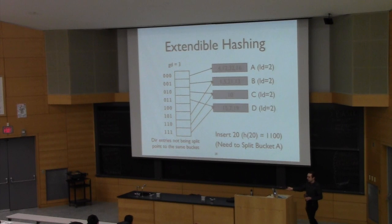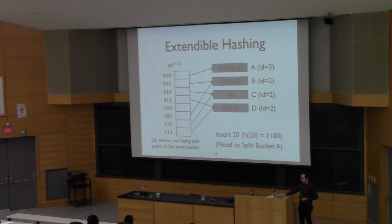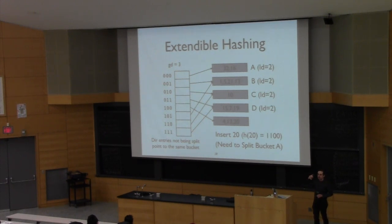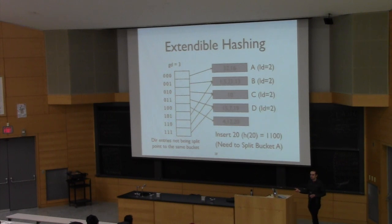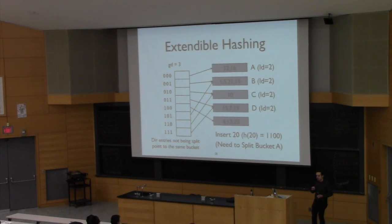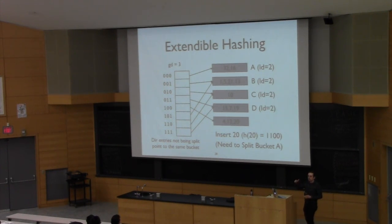The page that we need to split — we'll create a new page and use that extra bit to define which values go into each page. In this case, 32 and 16 both hash to 0,0,0, and 4, 12, and 20 all hash to 1,0,0. So I'll create this new page, and now all the old pages that didn't need to get split are still being pointed to correctly, but the new page is now safely split.